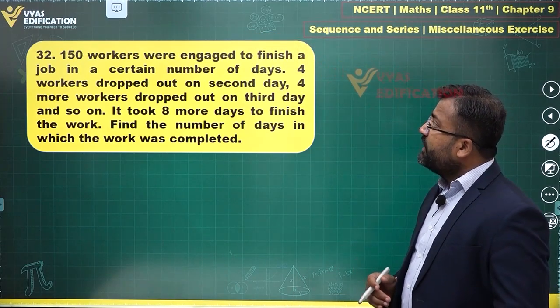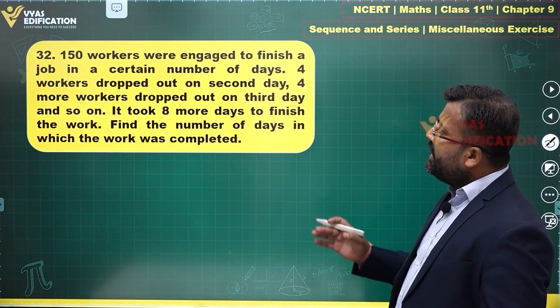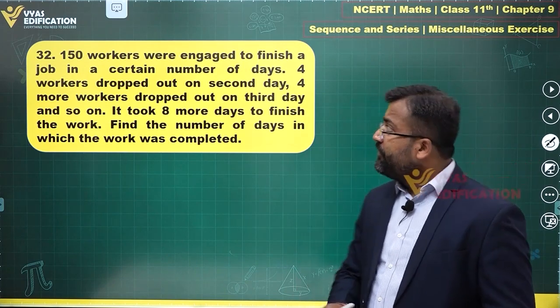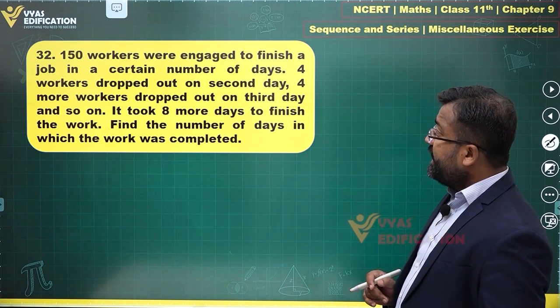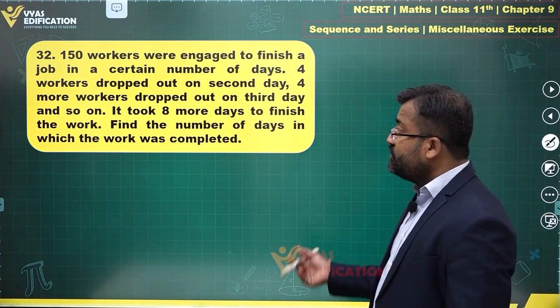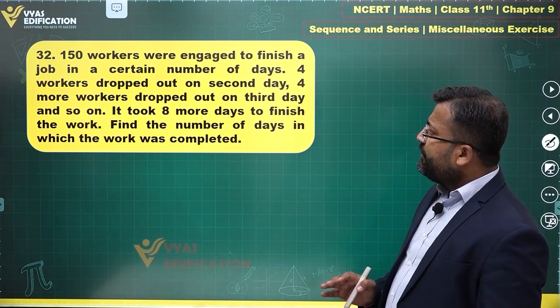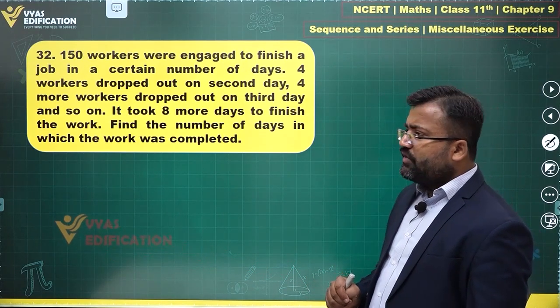Question number 32 says, 150 workers were engaged to finish a job in a certain number of days. Four workers dropped out on second day, four more workers dropped out on third day and so on. It took eight more days to finish the work, find the number of days in which the work was completed.